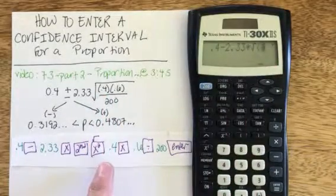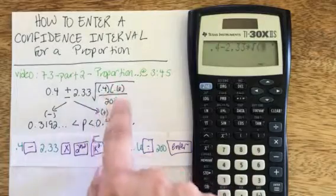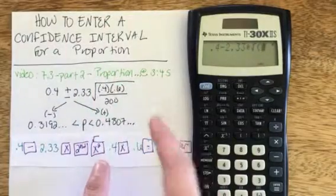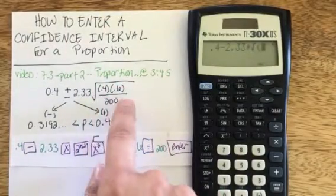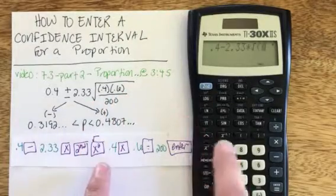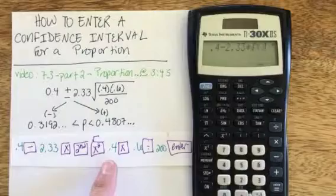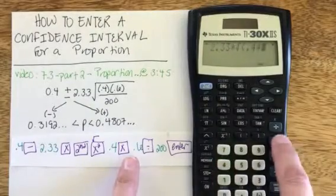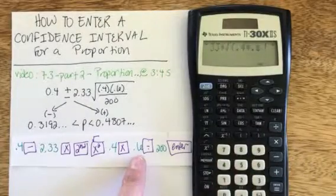Inside of these parentheses, I don't need the parentheses, sorry, inside the square root, I don't need the parentheses as they're listed. That was for clarity in handwritten notes with decimals. But I can now just enter 0.4 times 0.6 for the numerator.